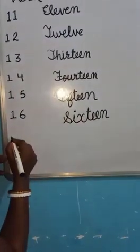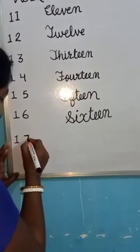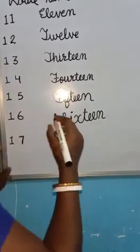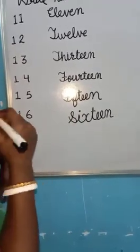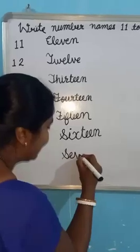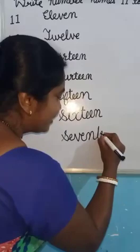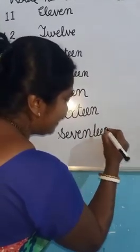Then 17, 1-7, 17. And the spelling of 17 is very simple. S-E-V-E-N-T-E-E-N, 17.